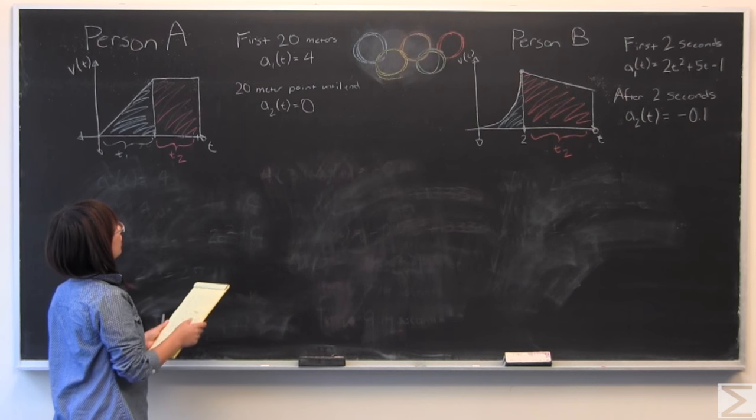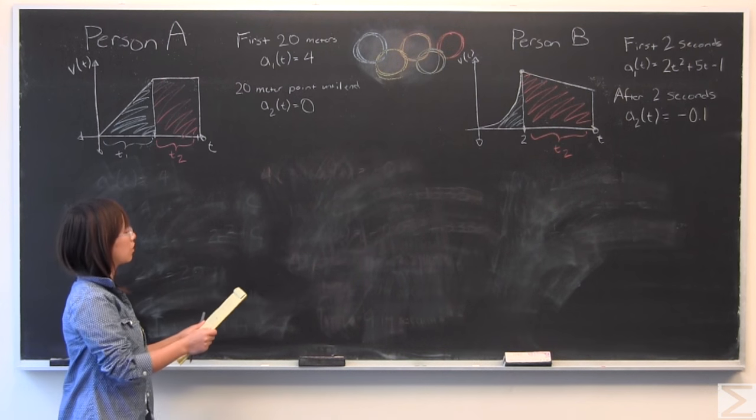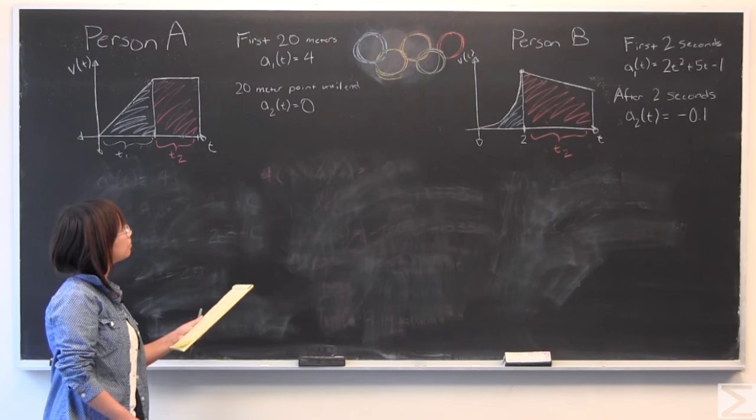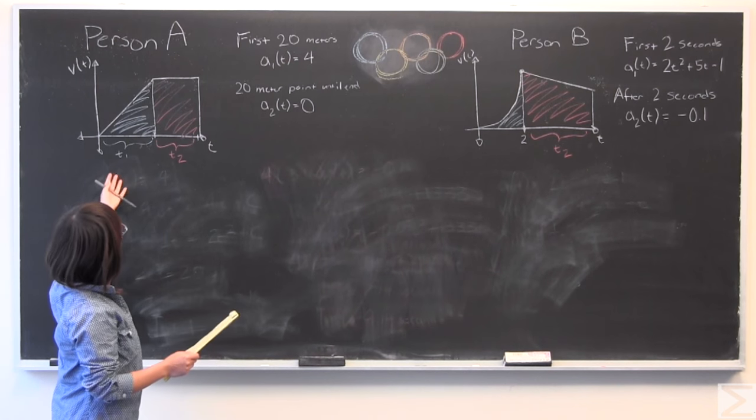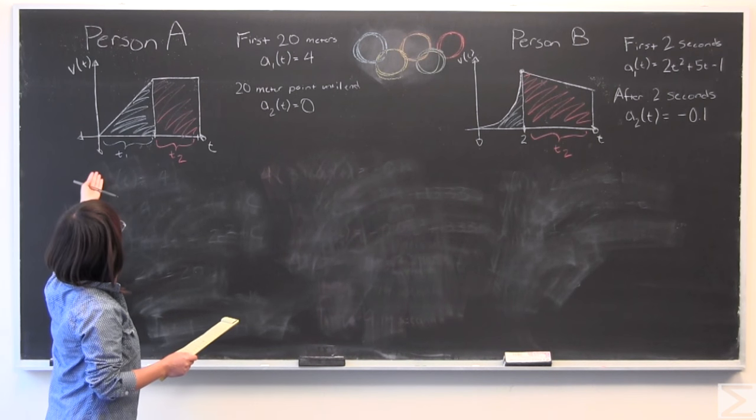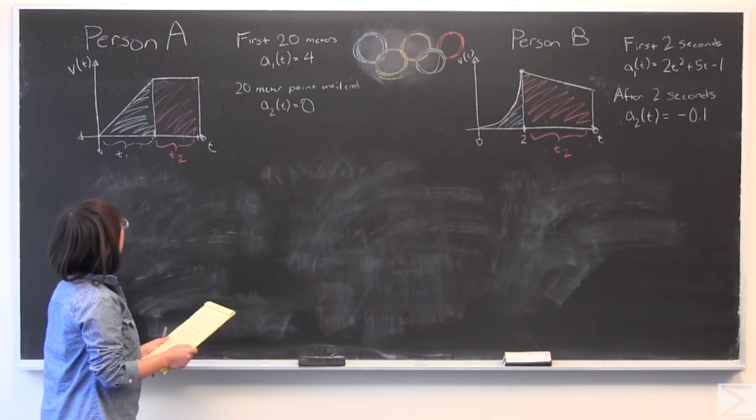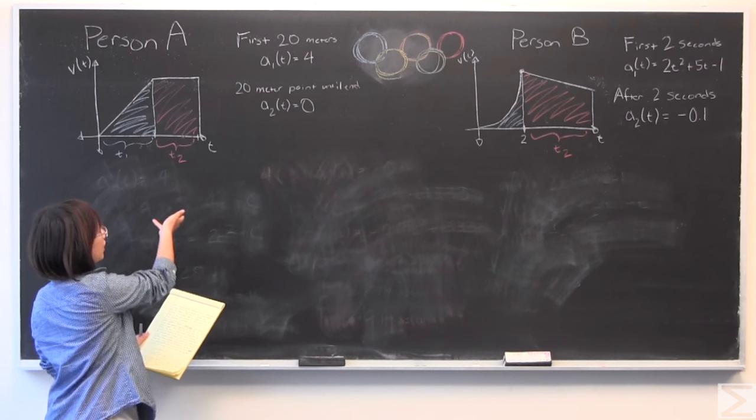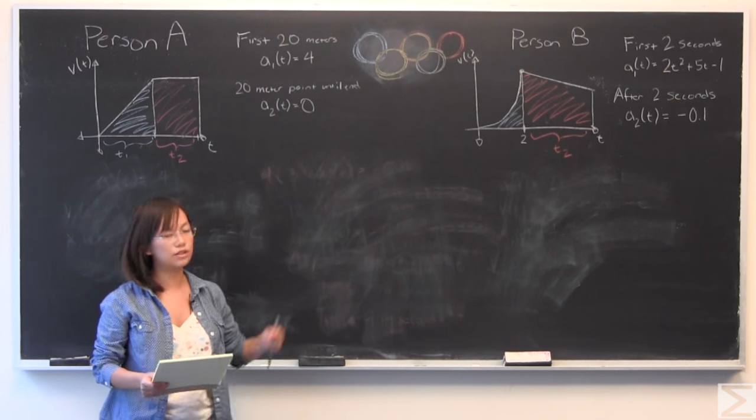So let's get started. So for person A, we're going to start there. The acceleration is given as 4 meters per second squared for the first 20 meters. It's important to note that we're given, I have drawn out the velocity time curve. We're going to solve for that. But it's important to have this because the area underneath the curve gives the distance traveled.